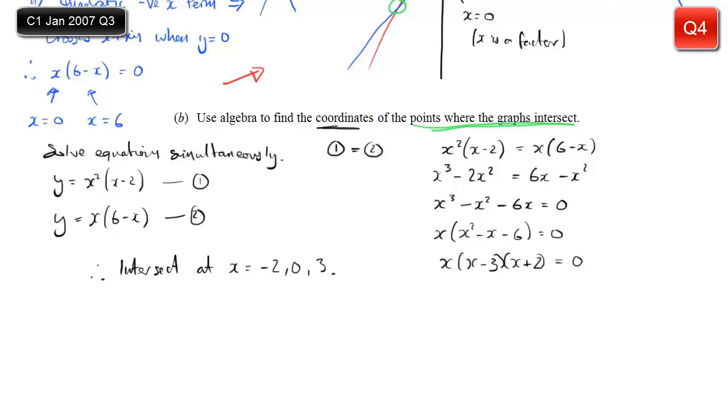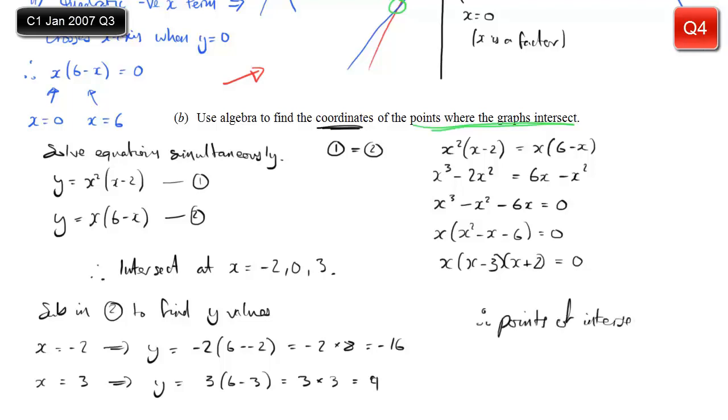But I want the coordinates, don't I? It asks for the coordinates, the points. That means the y values as well. So we're going to have to substitute these x values back into any of my equations. I'll substitute into equation 2 because that's the simplest one. So when x is minus 2, y is equal to minus 2 times (6 - minus 2), which is minus 2 times 8, which is minus 16. Next, when x is equal to 3, substitute that into equation 2, I get 3 times (6 - 3), so obviously that's 3 times 3, which is 9. So those are my y values. I already know that when x is 0, y is 0. So my three points of intersection are minus 2, minus 16, (0, 0), and (3, 9).